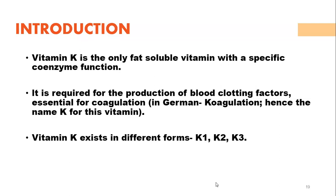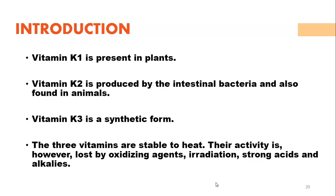Vitamin K exists in three forms: K1, K2, and K3. K1 is present in plants, K2 is produced by intestinal bacteria and found in animals, and K3 is a synthetic form.